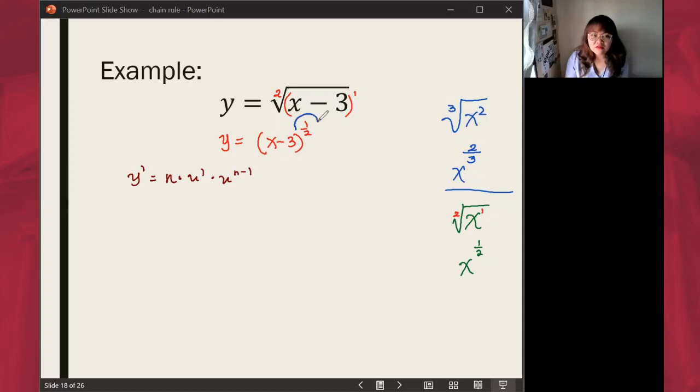Your exponent is the value for n, and then the expression inside the parenthesis, that becomes your u. So our u here is x minus 3.